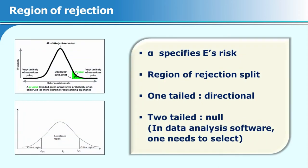Having understood this, let us look at the very important concept of the region of rejection on the normal curve. Usually a researcher has to decide whether they want a one-tailed or a two-tailed test for their data analysis. A careful look at the slide shows that on the normal curve one has to decide a specific area — your region of rejection — and this will depend upon the alpha value that you have chosen.